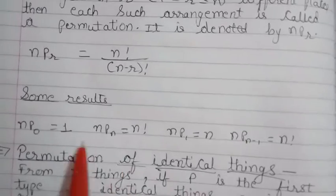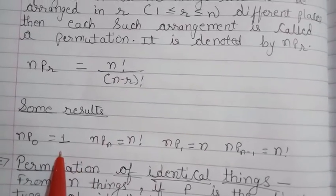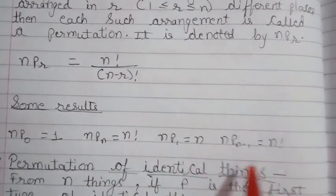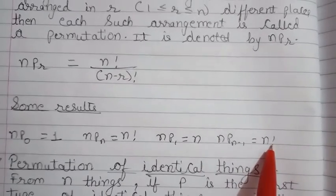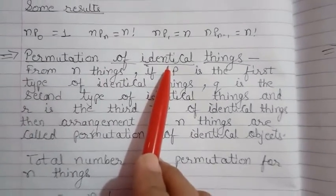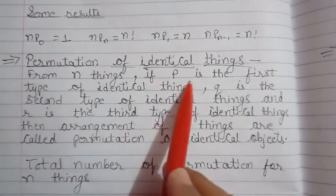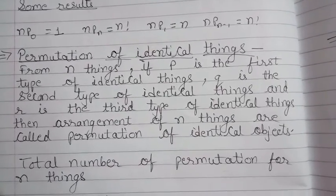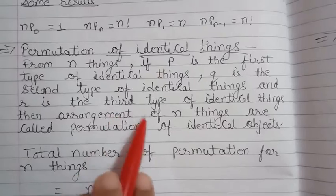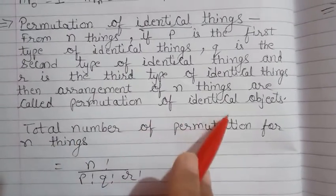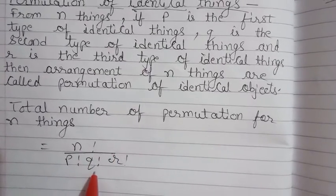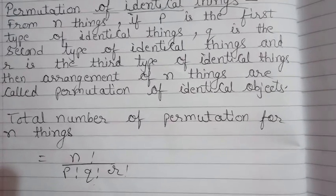Some important results: nP0 is equal to 1, nPn is equal to n factorial, nP1 is equal to n, and nP(n−1) is equal to n factorial. Now, permutation of identical things: if p is the first type, q is the second type, and r is the third type of identical things, then the total number of permutations of n things is equal to n factorial upon p factorial times q factorial times r factorial.